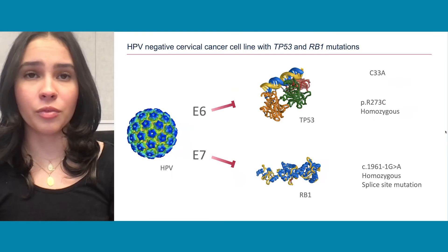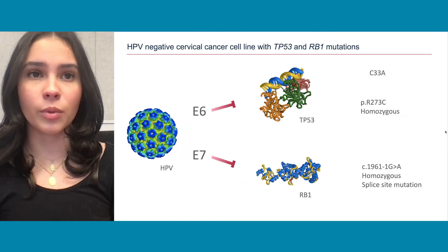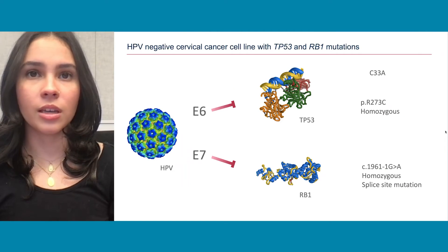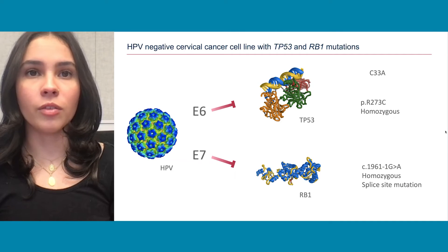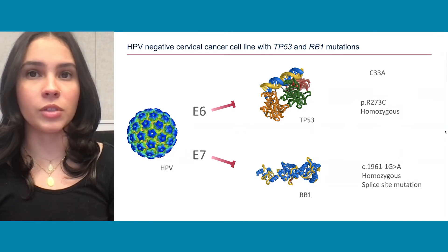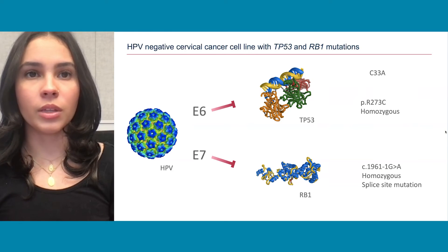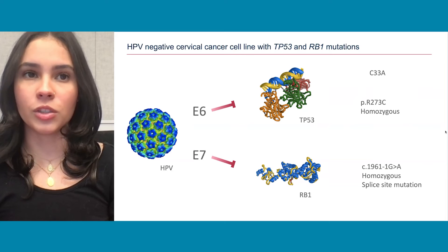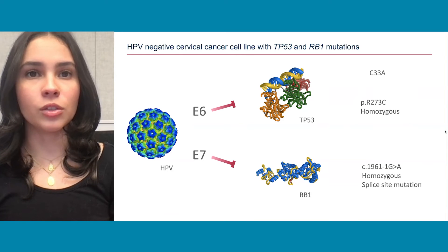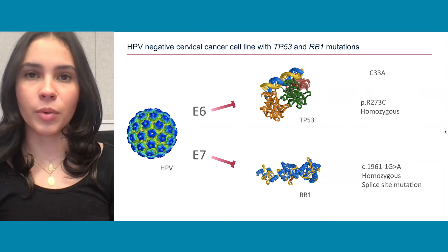Going back to HPV itself, we noticed an interesting case where one cell line, C33A, did not contain any HPV reads. This was supported by all of our long-read sequencings. Not having HPV would mean there would be no E6 or E7 to inhibit the tumor suppressor genes TP53 and RB1, but they were still seen inhibited due to mutations. Mutations were seen in TP53 with an amino acid change, and in RB1 with a splice site mutation where the G, essential for splicing, was changed to an A, causing the splice site to be missed and deleting part of the protein.